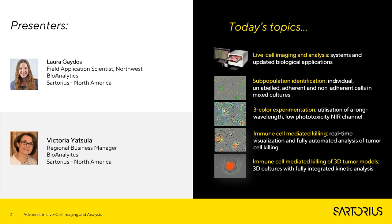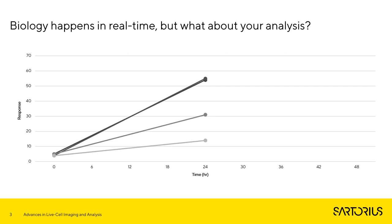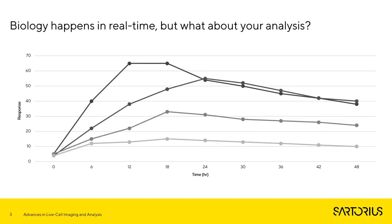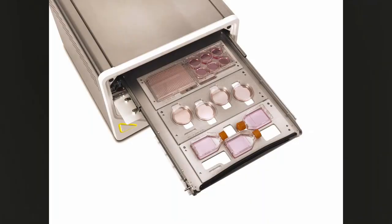Thank you Victoria. I'd like to start with my favorite illustration of why we use the IncuCyte — we all know biology happens in real time, but what about your analysis? This first example is a 24-hour endpoint assay, the second is a 48-hour endpoint — we see slightly different results but the two top lines are still about the same. Here's the IncuCyte assay showing what's happening in real time: with both endpoint assays we missed a key difference in the treatment shown at the top, which has a response that peaks at 12 hours. The IncuCyte lives in the incubator — that's the best place for your cells.